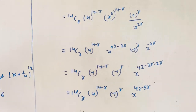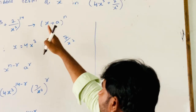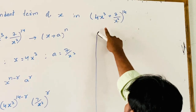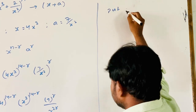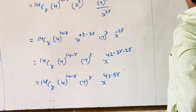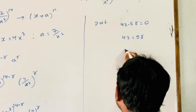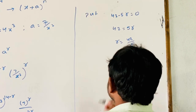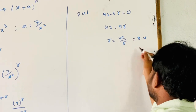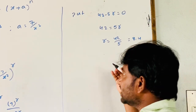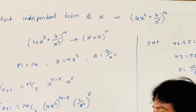To find the independent term of x, put 42 − 5r = 0, so 42 = 5r, giving r = 42/5 = 8.4. Since this is a decimal value and not an integer, this expansion does not have an independent term of x.